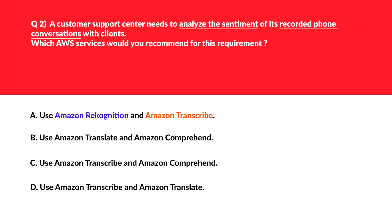Let's look at this question — it's about analyzing sentiment from a recorded phone conversation, like a support center or call center use case scenario. We've tested this practically in the hands-on AWS Gen AI course. Option A says: use Amazon Rekognition and Amazon Transcribe. Rekognition is used for image and video analysis and not for sentiment analysis as required — so Rekognition is the odd one out and we'll reject this.